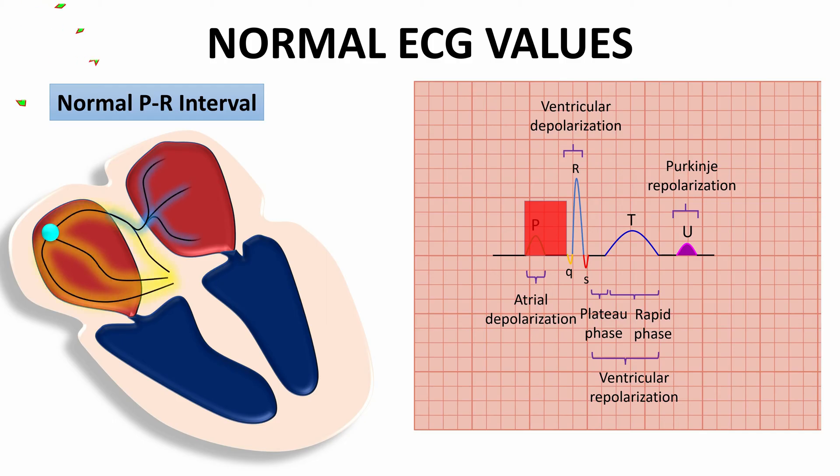The AV conduction time includes time for atrial depolarization, conduction delay in the AV node, and time required for the impulse to traverse the conduction system before ventricular depolarization begins.